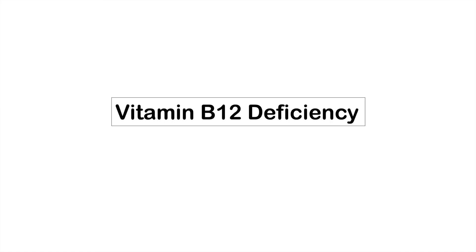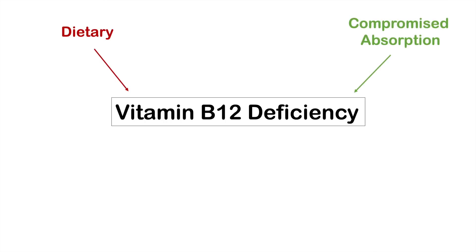Vitamin B12 is acquired from our diet, generally from animal products. If we have a vitamin B12 deficiency, it's either through reduced dietary intake or through one of many different compromised absorption processes — through use of certain medications, certain disease processes, autoimmune conditions, or even a fish tapeworm. Please check out my lesson on causes of vitamin B12 deficiency.